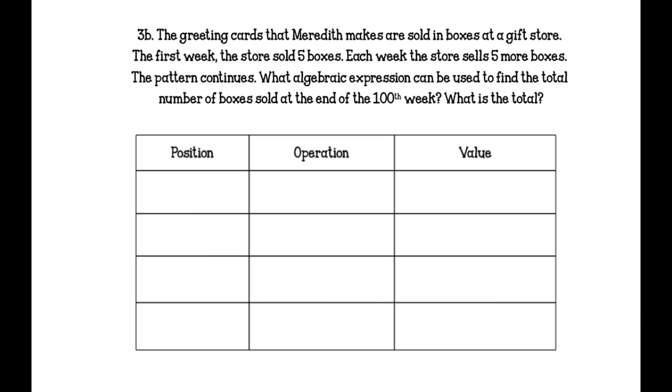Problem 4: The greeting cards that Meredith makes are sold in boxes at a gift store. The first week, the store sold 5 boxes. So let's put that down. First week, so that's position 1, they sold 5 boxes. So different ways that we could get from 1 to 5 is we could do plus 4, or we could do times 5.